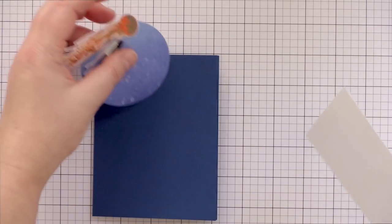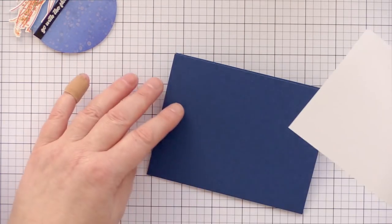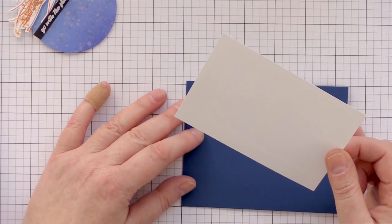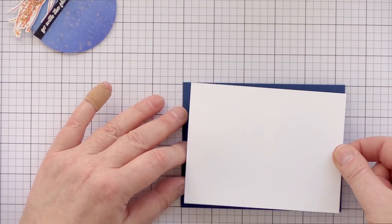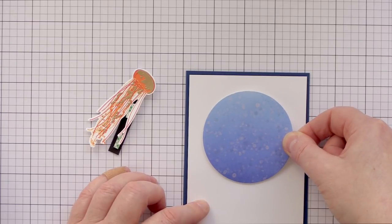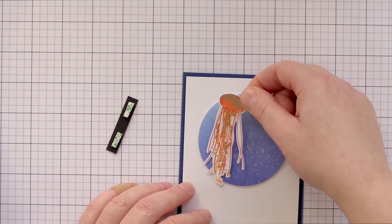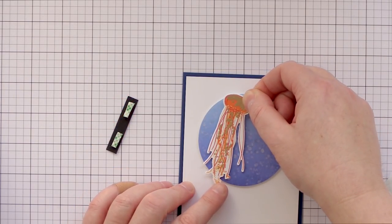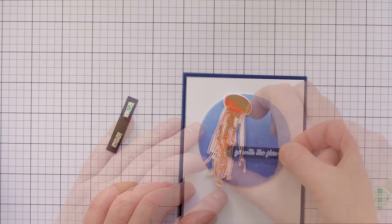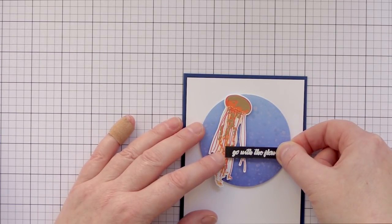I've cut, scored, and folded a deep blue A2 card base, and then I've added foam adhesive to the back of a white panel just slightly smaller than the card base. I've also added foam adhesive to the back of the ink blended circle, the jellyfish, and the sentiment strip, and it's just a case of removing the backers of the foam adhesive and adhering each piece in place.